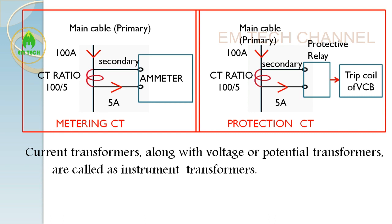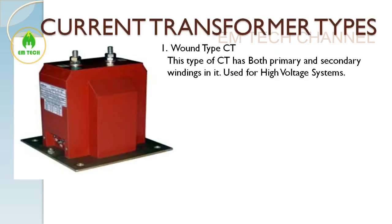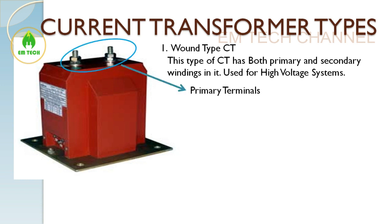Now let us see the types of CT based on construction. CTs are divided into three types. First is the wound type CT — in this type, both primary and secondary windings are present, and it is used for high voltage systems. The main line enters through the primary terminal P1 and exits through P2. Inside, there is a primary winding, and proportional to the current in this primary winding, a secondary current is produced.